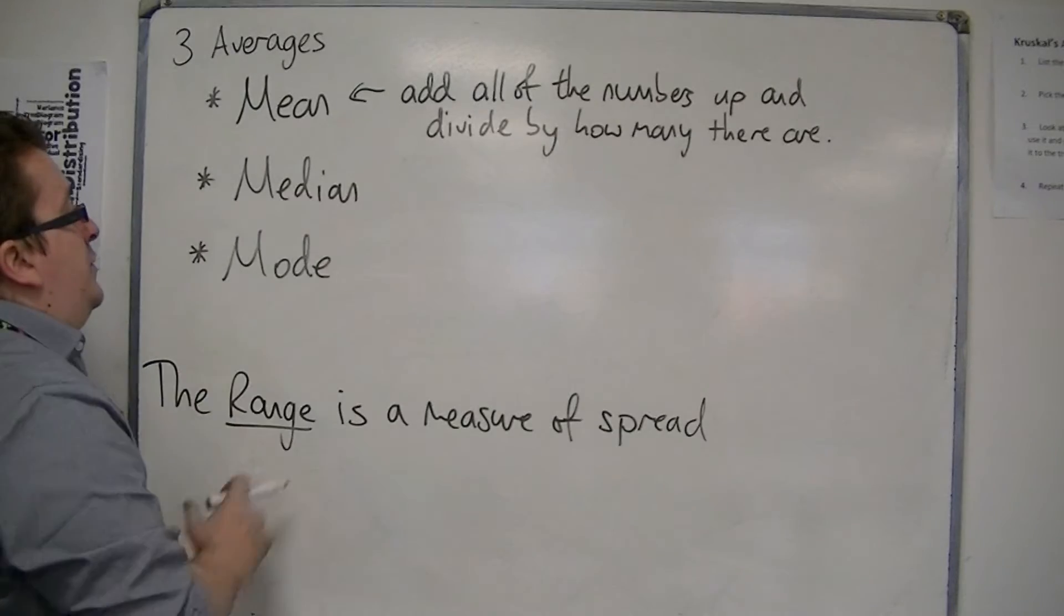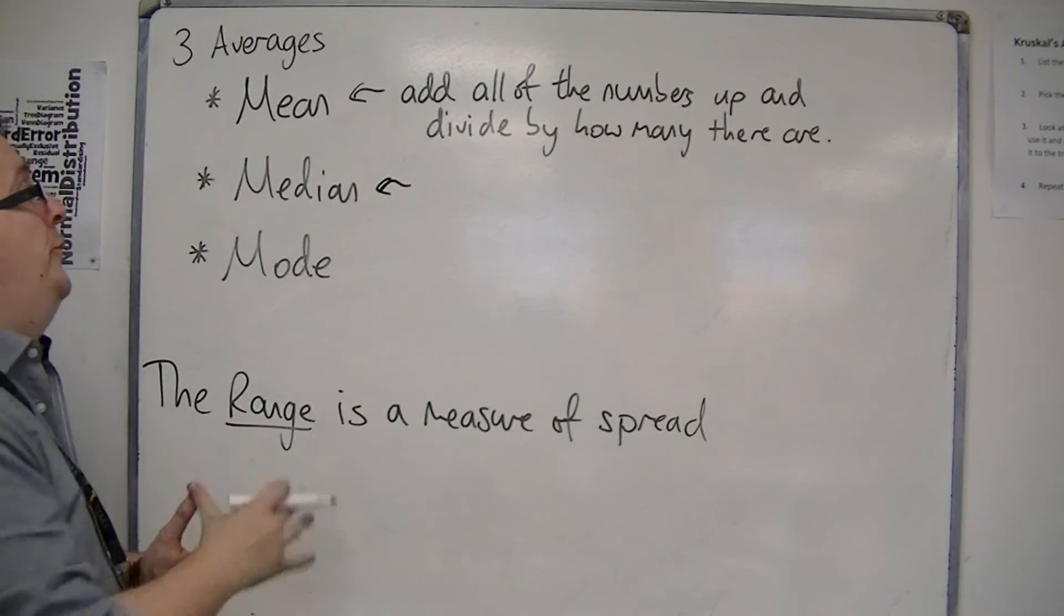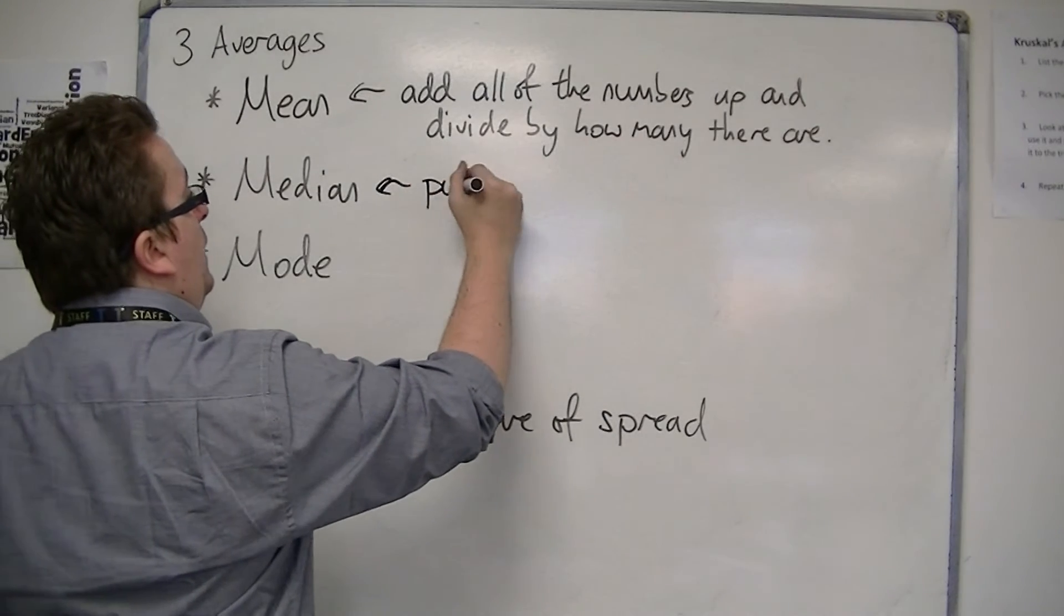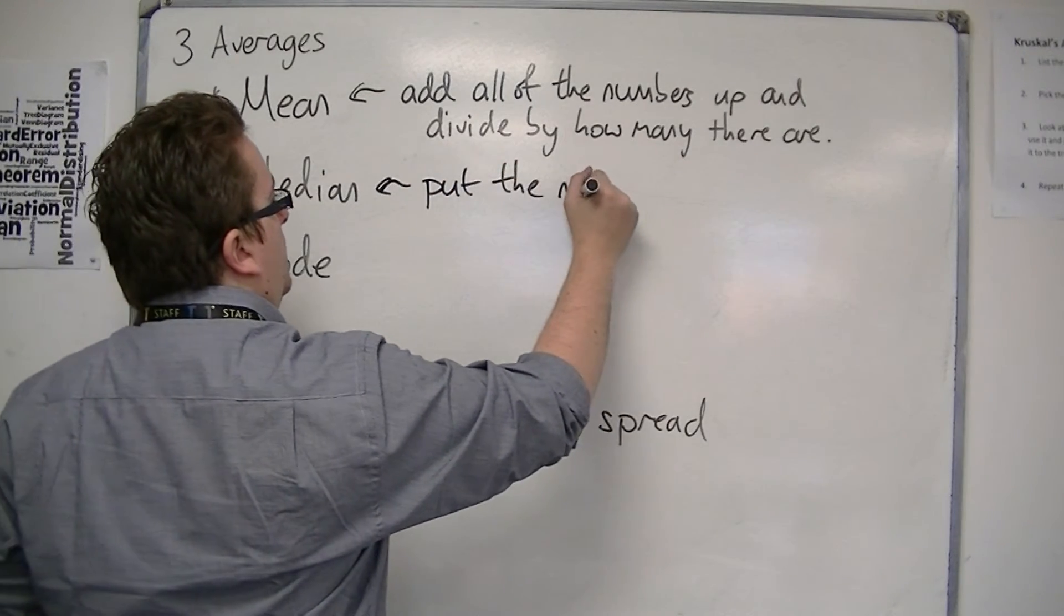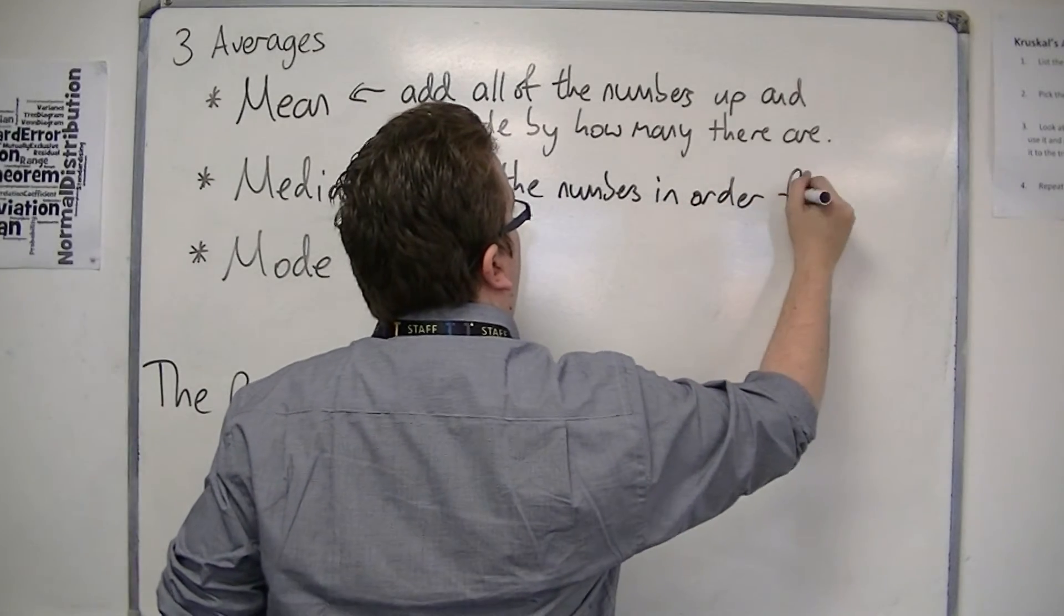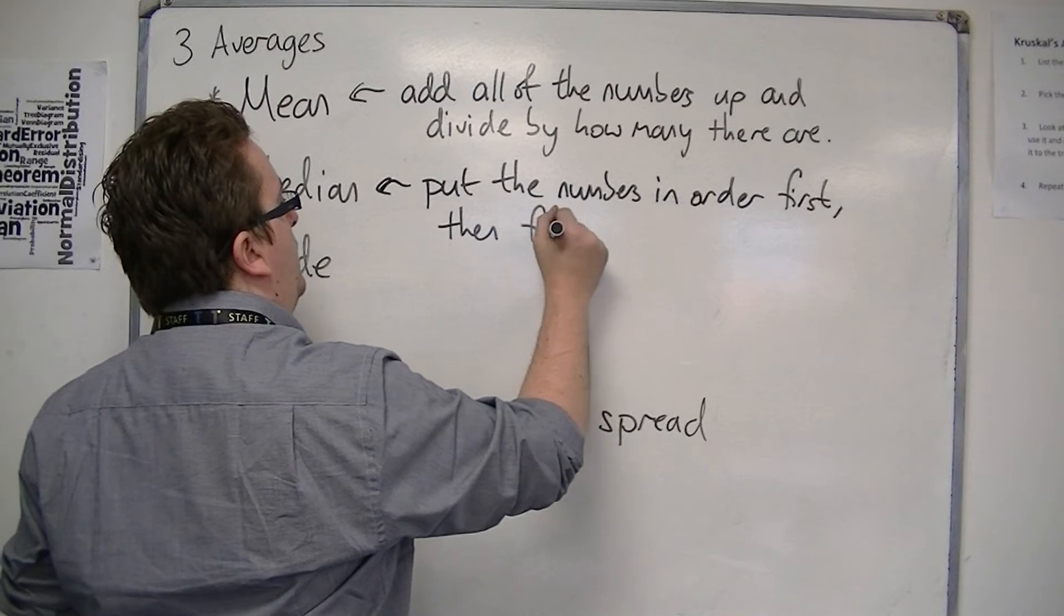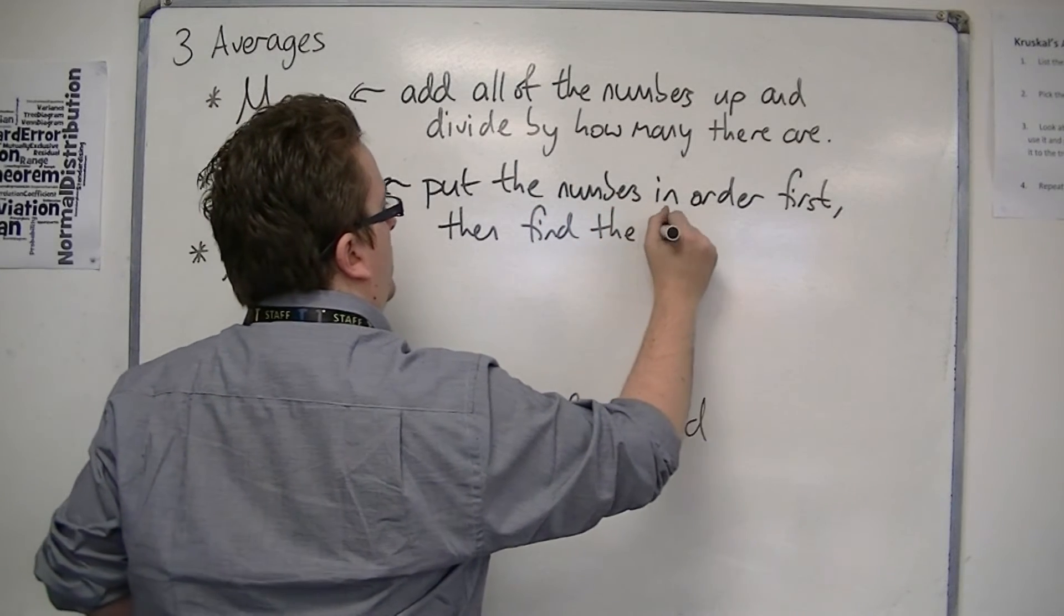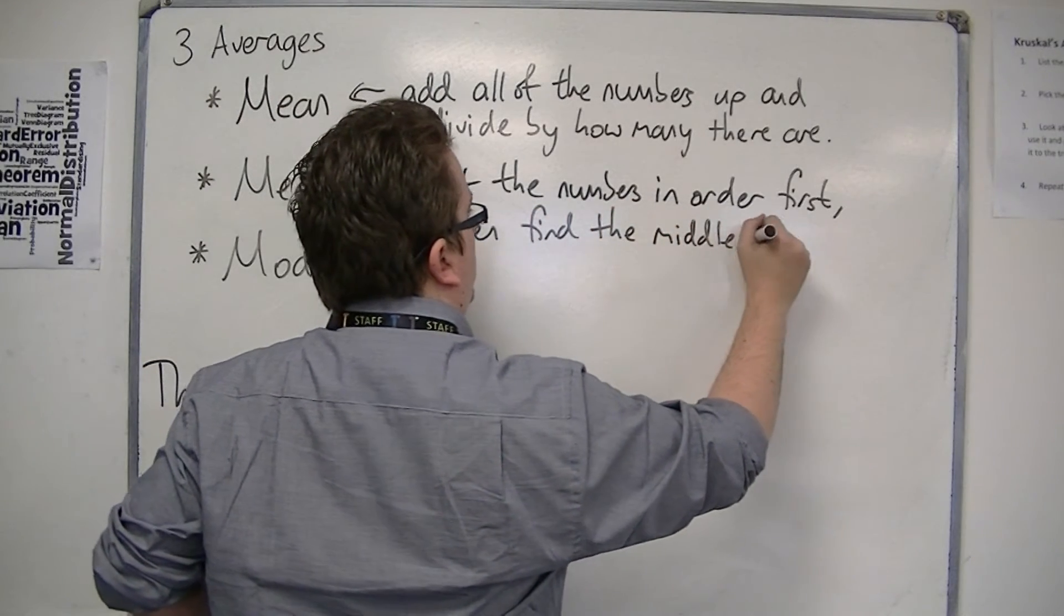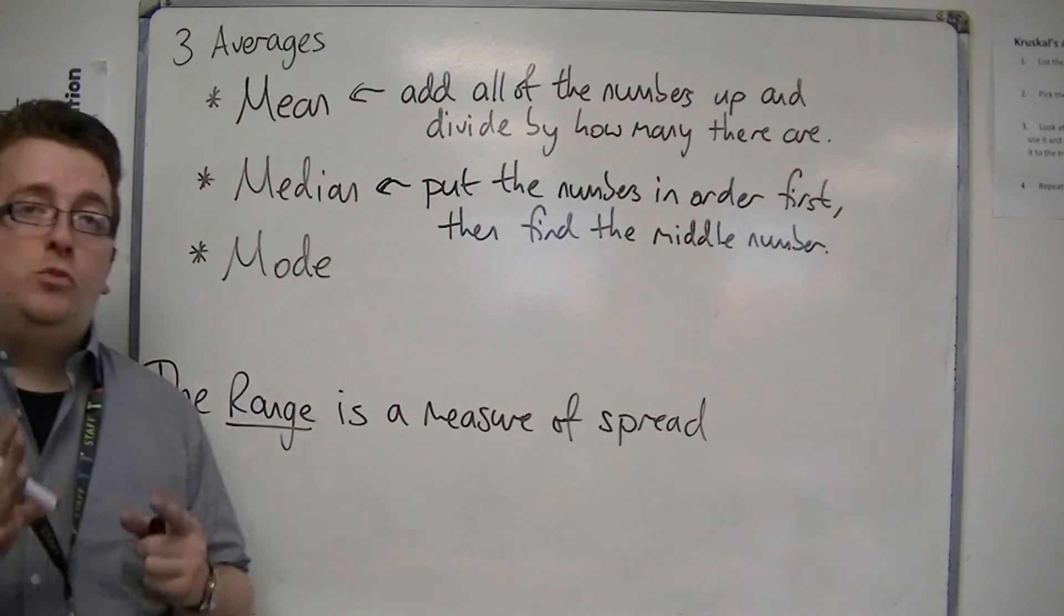Now, we also have these other two. We've got the median. For the median, you must put the numbers in order first. So put the numbers in order first. Then find the middle number. So the median is the middle number.